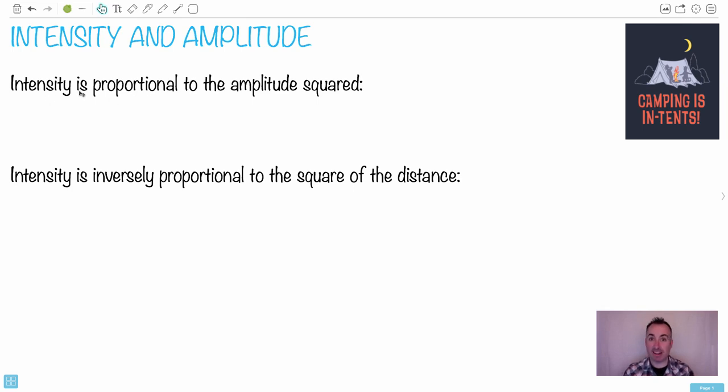We have intensity here and a definition for it, or at least how it's related to amplitude. We have that the intensity is proportional to the amplitude squared. What does that actually mean? That means you can say the intensity is proportional to the amplitude squared. That's the equation, and it's on your data booklet.